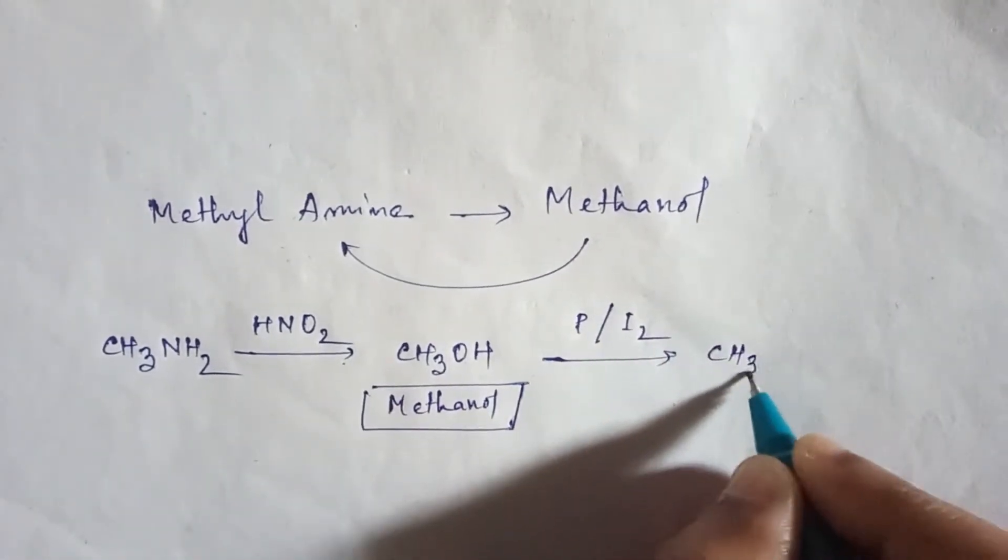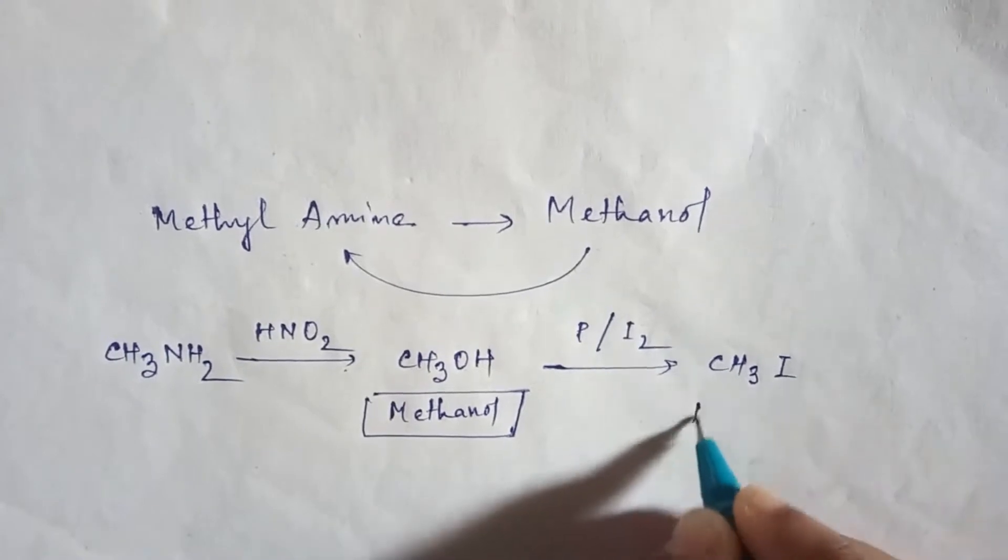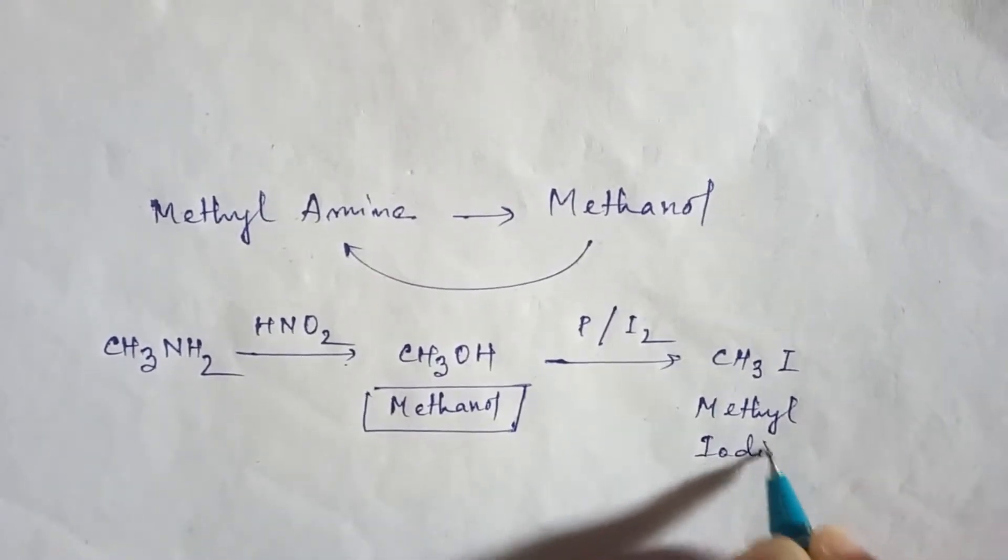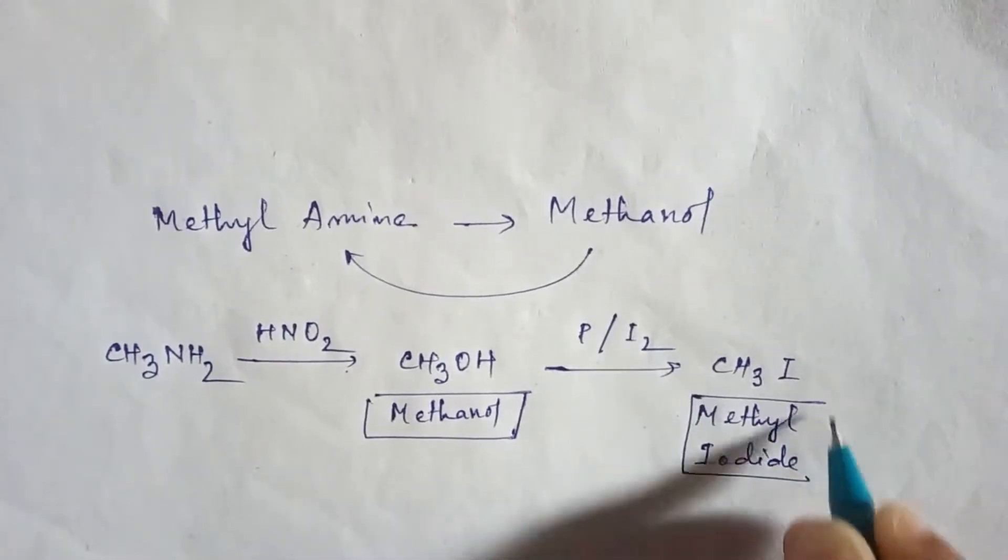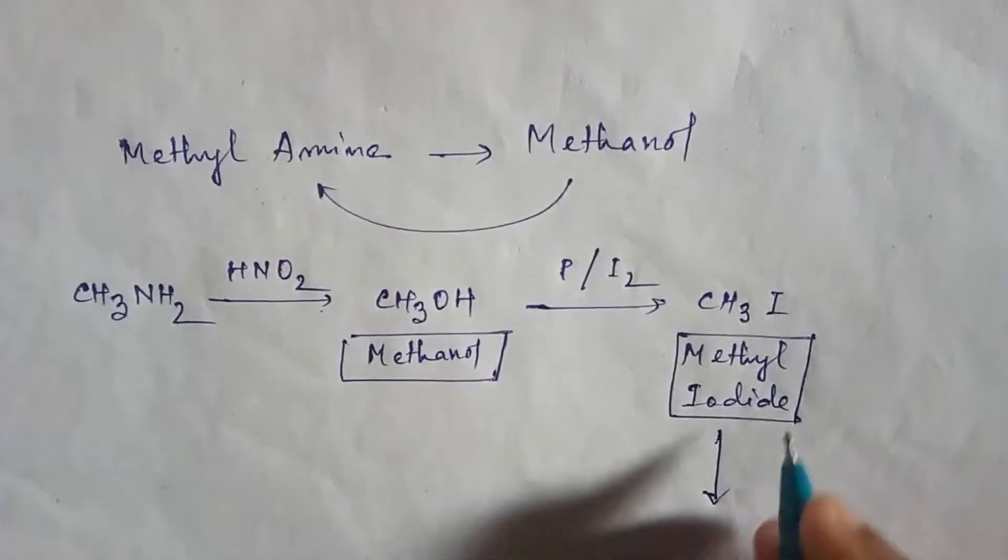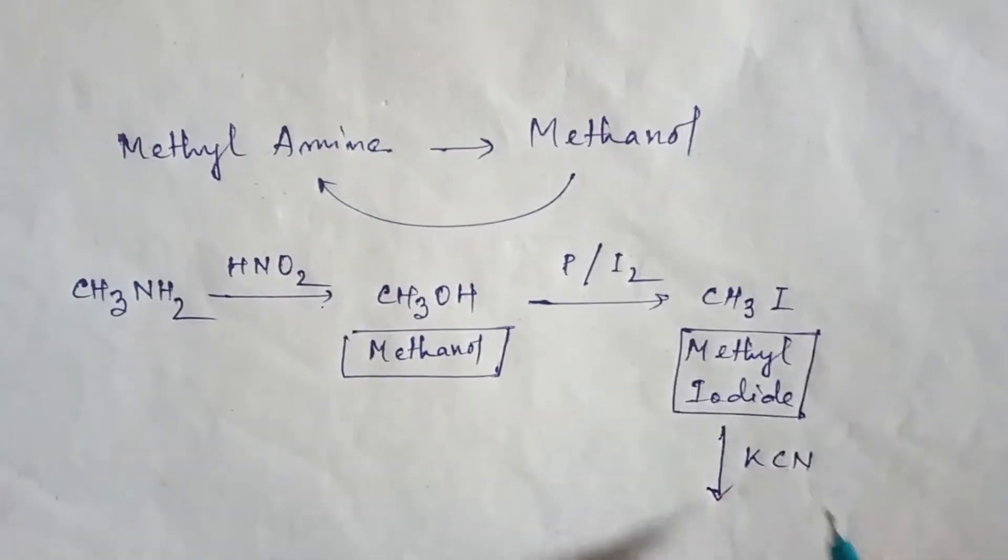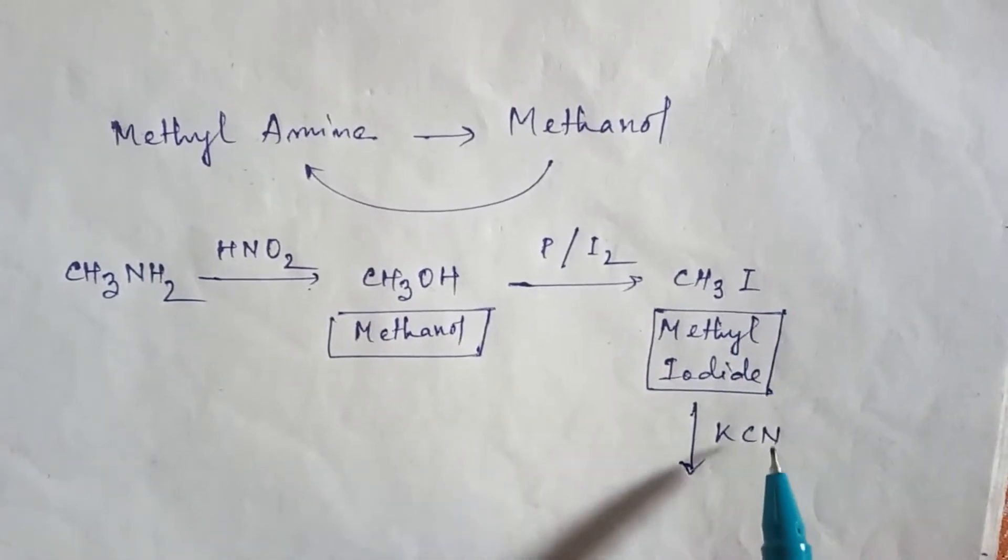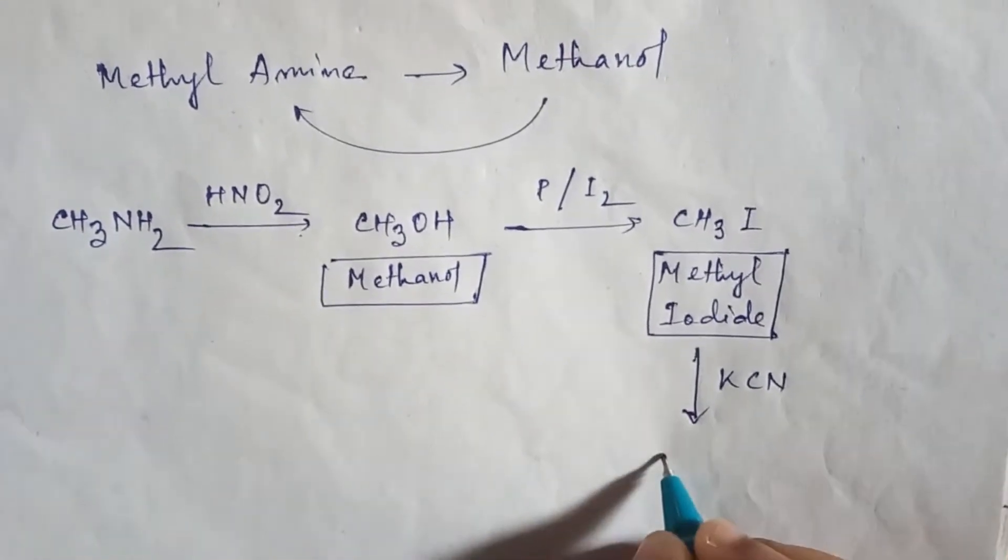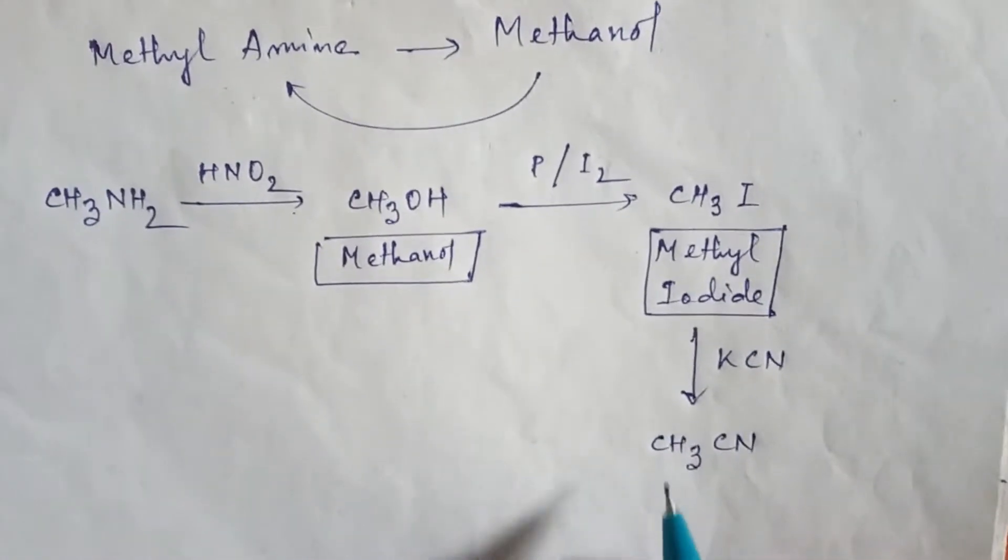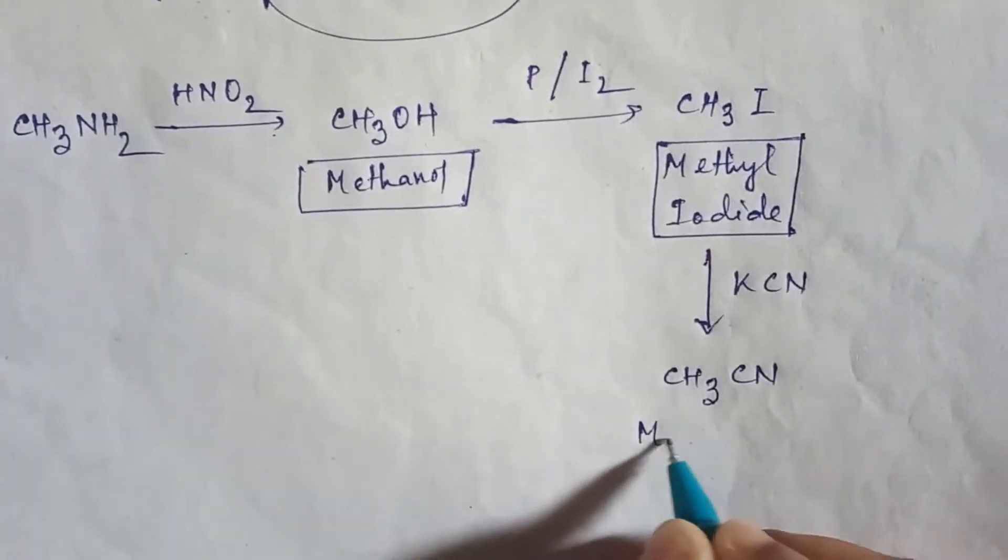Now if you give here potassium cyanide as a reagent, then iodine is a good leaving group. It will be replaced by cyanide and the product will be CH3CN, that is methyl cyanide.